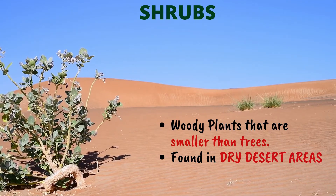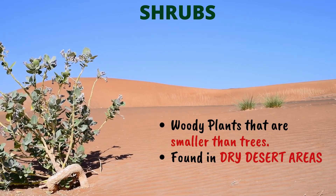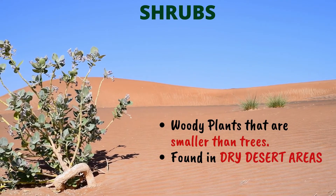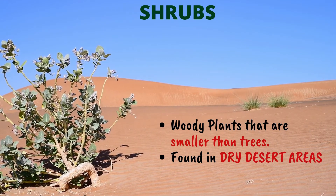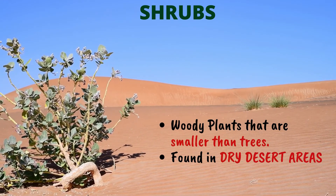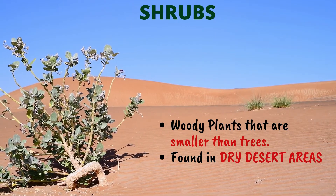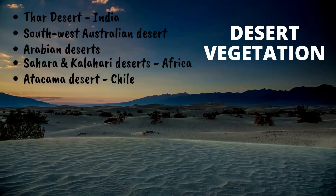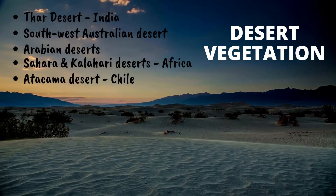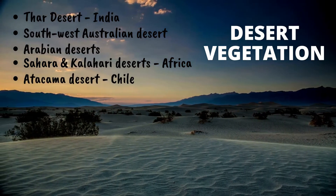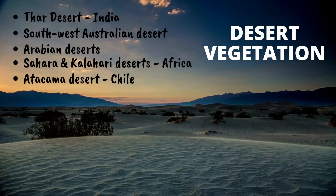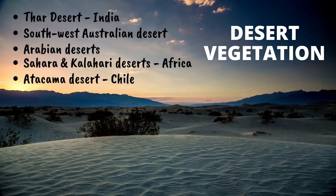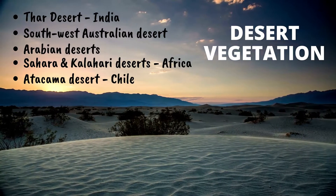What are shrubs? Shrubs are woody plants that are smaller than trees, and these are found in dry desert areas. Desert vegetation — where can you find desert vegetation? In the Thar Desert in India, the Southwest Australian Desert, the Arabian Deserts, the Sahara, and the Kalahari.